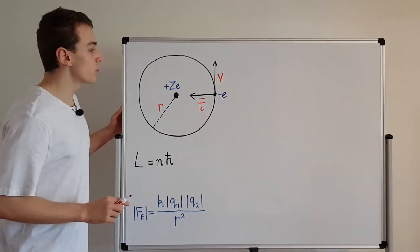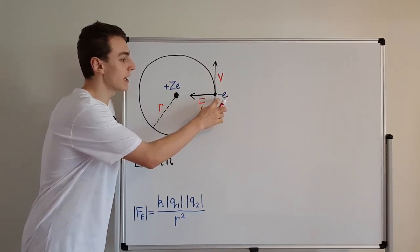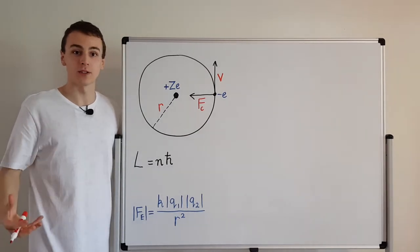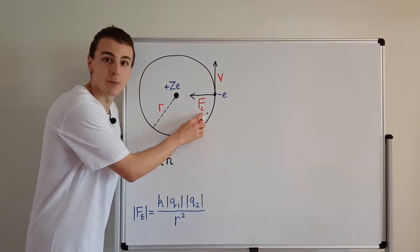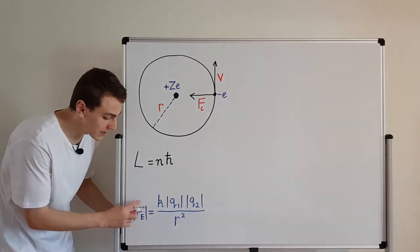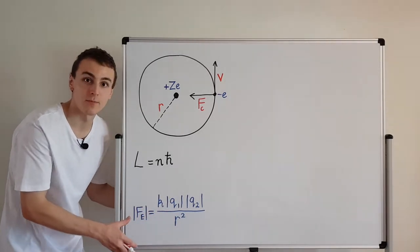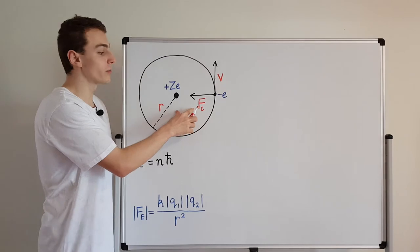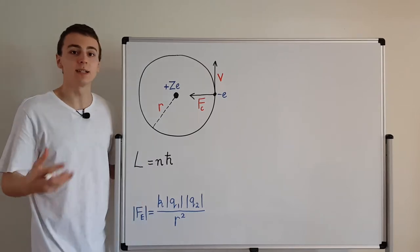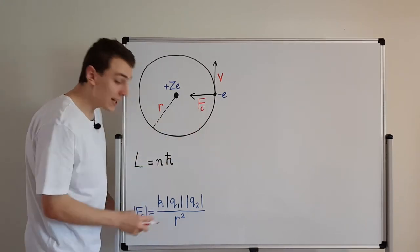One fact we can see from the diagram: the centripetal force between the electron with charge minus E and the nucleus with charge plus ZE is the same as the Coulomb force. The centripetal force Fc comes from uniform circular motion, and Fe is the electrostatic force given by Coulomb's law. Since their magnitudes are equal, we can set them equal to each other.